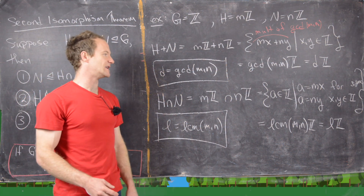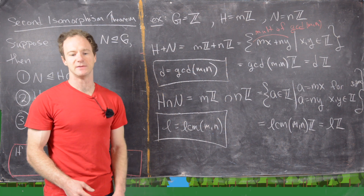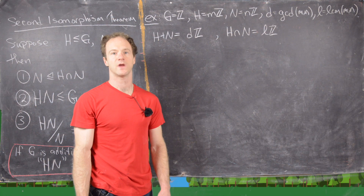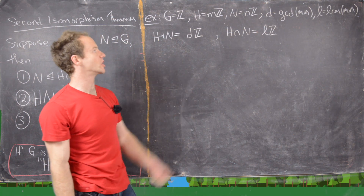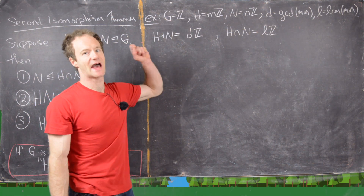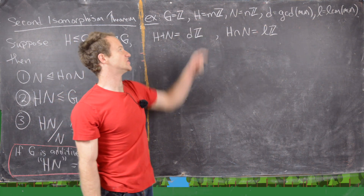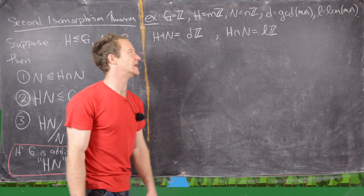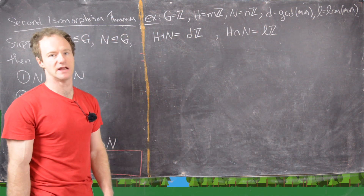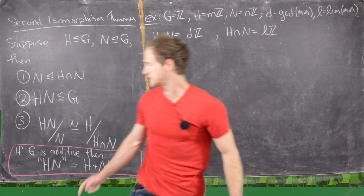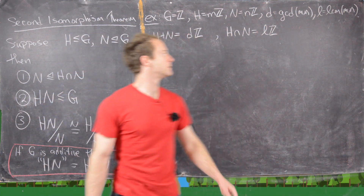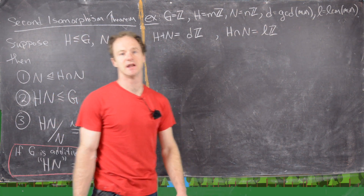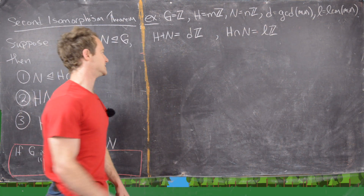Let me bring up just the notation and intermediate results we need. We have G equals the additive integers, H equals mℤ, N equals nℤ, D equals gcd(m,n), and L equals lcm(m,n). We argued that H plus N equals Dℤ, and H intersect N equals Lℤ. Now let's apply the second isomorphism theorem.